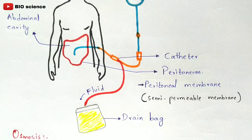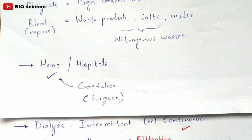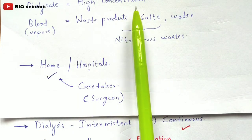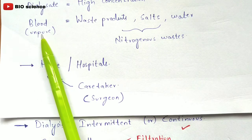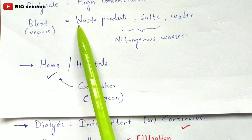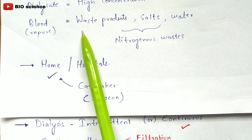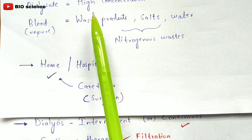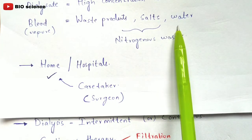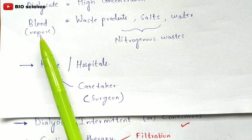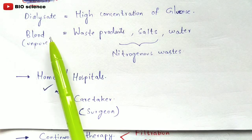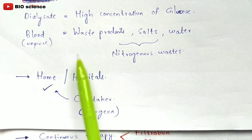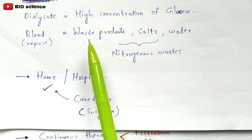The diffusion process works because the dialysate solution has a high concentration of glucose. Through diffusion, the waste products, salts, and water present in the impure blood are absorbed by the dialysate solution introduced into the body. The waste fluid is then drained into the drain bag, and this cycle continues.